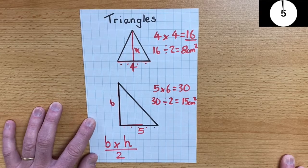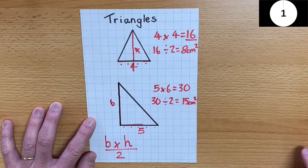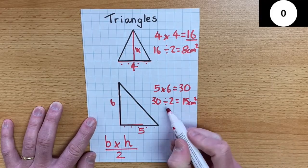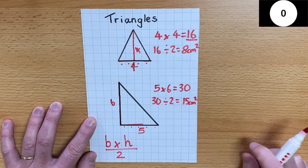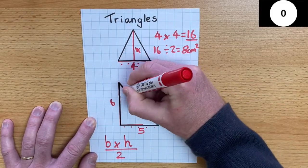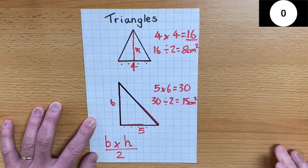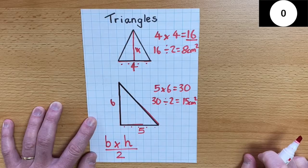Now, a couple of reasons why people do not work out the area of triangles correctly is because, one, they may forget to divide by 2. Or, the second reason is they don't calculate the height of the triangle. They think that the longest side is the same as the height, but it is not. It is how tall the triangle goes.